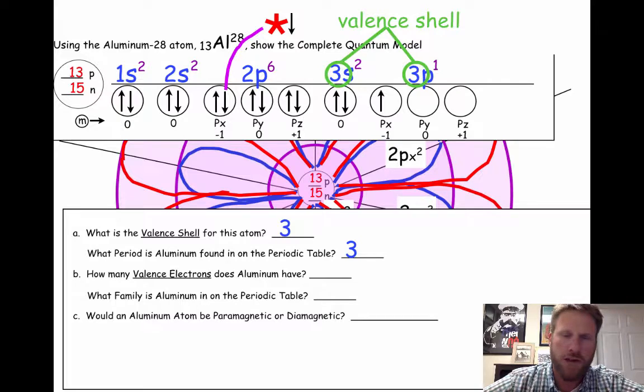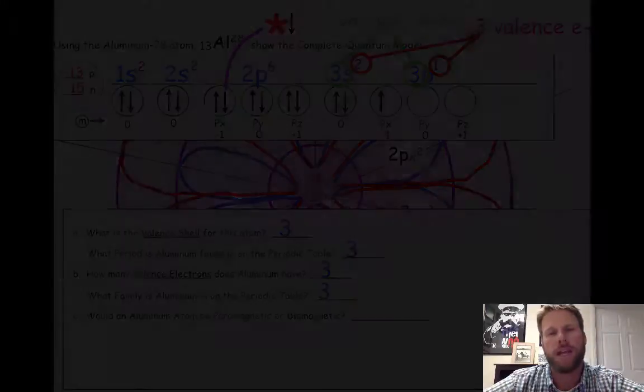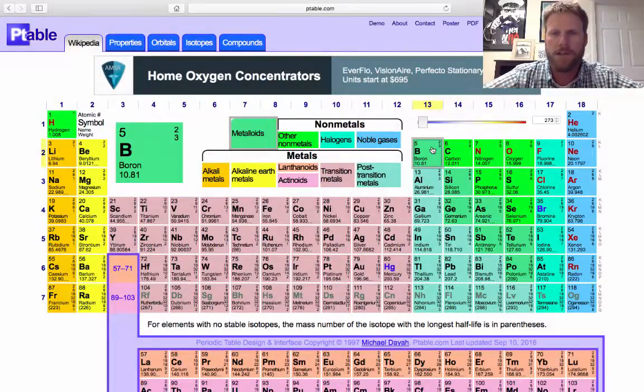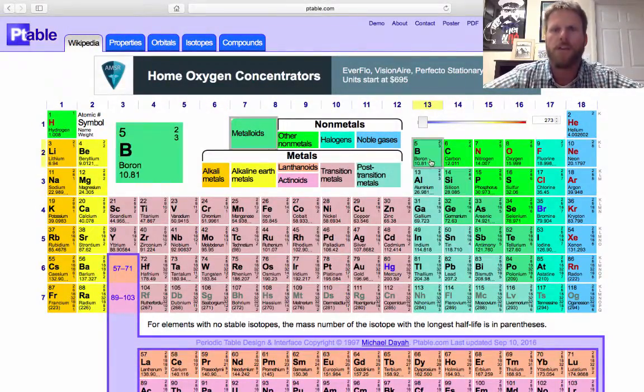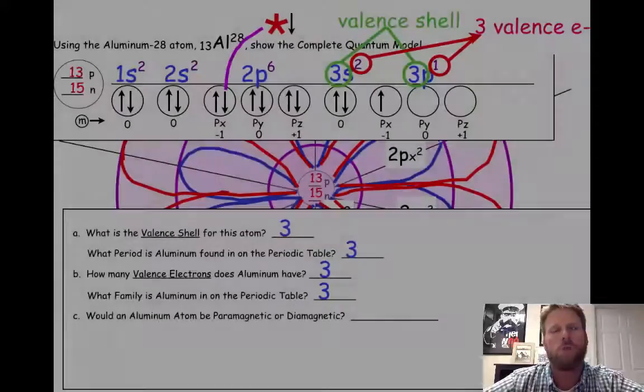Alright, valence electrons, if you count them up, aluminum has 1, 2, 3 valence electrons. And if you look on the periodic table, aluminum is in the third family. Also, aluminum is in the third family, or column number 3 on the periodic table. Weird.